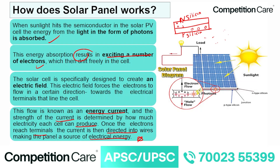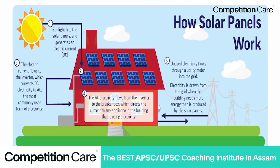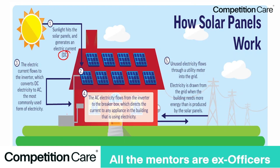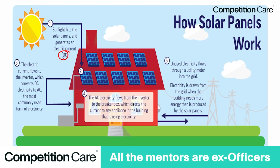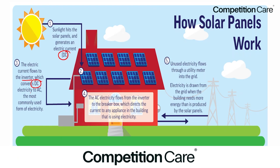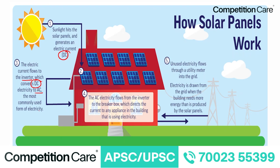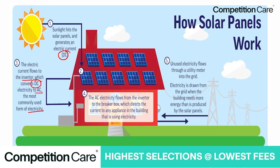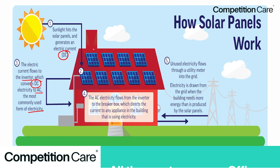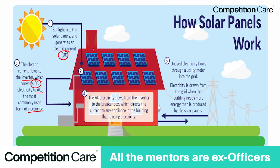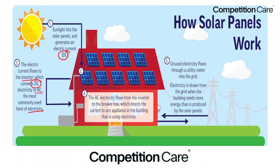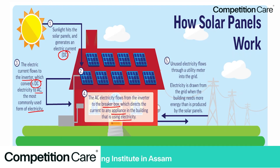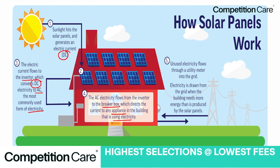The sunlight produces direct current (DC). From a prelims perspective, it's important to note that the electric current flows to the inverter, which converts direct current (DC) electricity to alternating current (AC) electricity — the most commonly used form of electricity. The AC electricity flows from the inverter to a breaker box which directs the current to appliances in the building. Any unused electricity can go back to the grid.